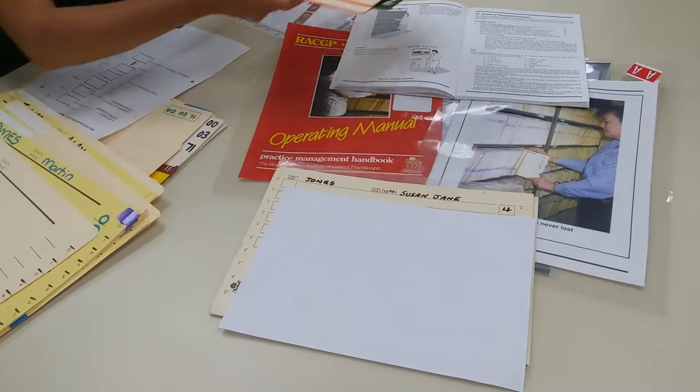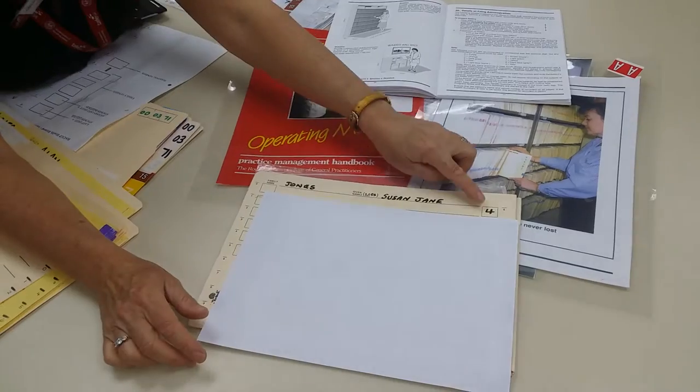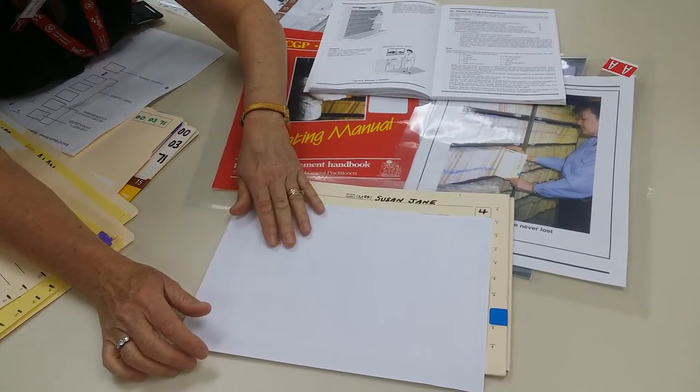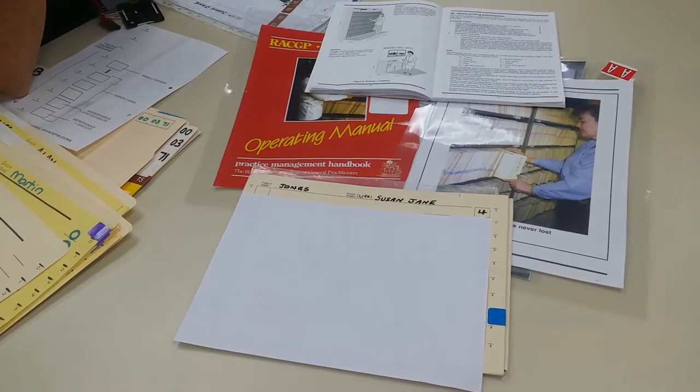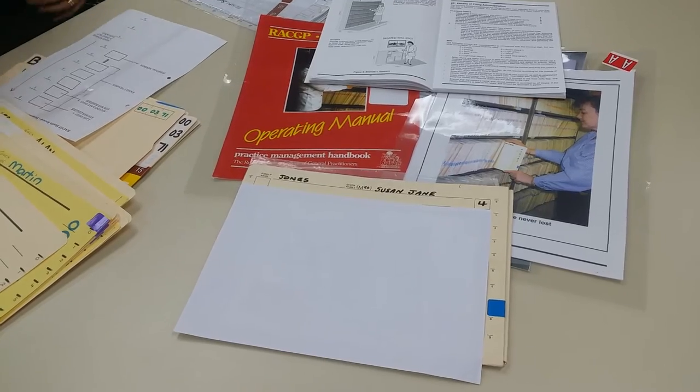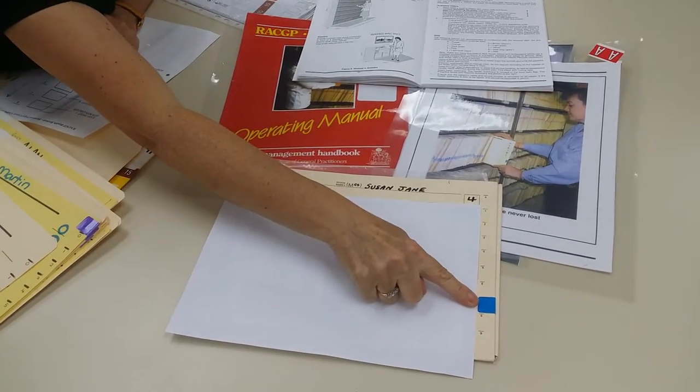But as far as the Royal Australian College is concerned, that file ends in a 4, so it will have a blue sticker. So the next question is, why is the blue sticker placed way down here?